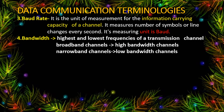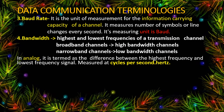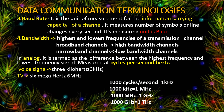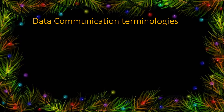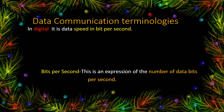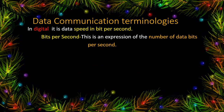One thousand cycles per second equals one kilohertz, one thousand kilohertz equals one megahertz, one thousand megahertz equals one gigahertz. In digital data, speed is measured in bits per second.